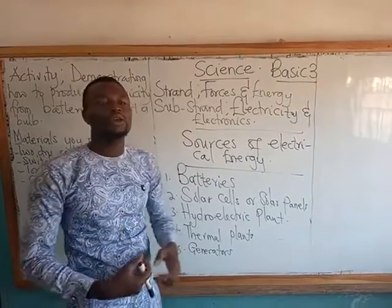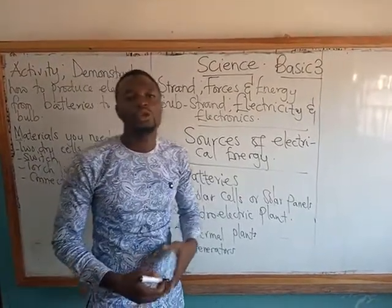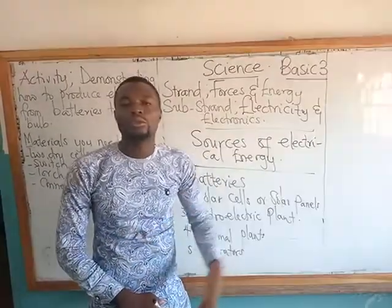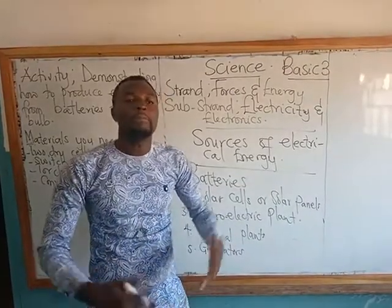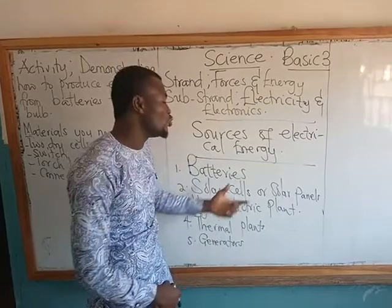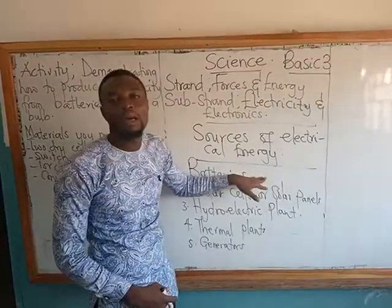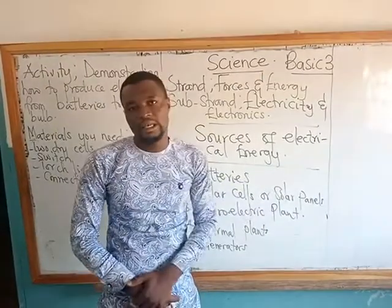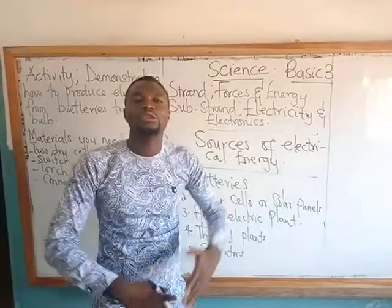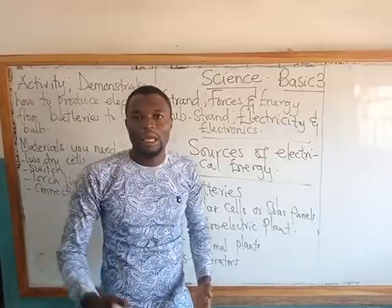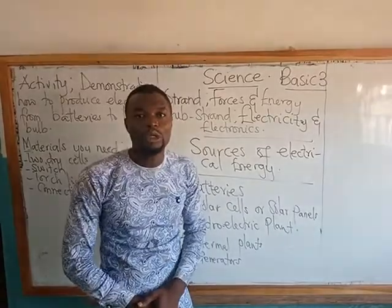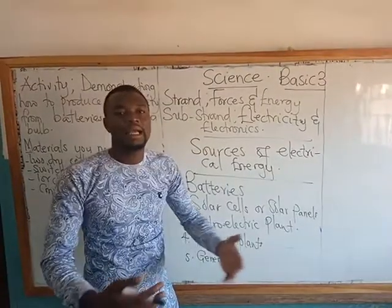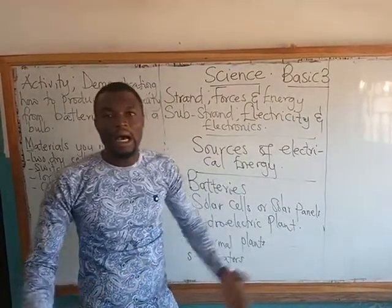We have another form of battery which we call wet cells. Those wet cells are usually used to power machines such as cars, motorbikes, and bigger machines. So when it comes to types of batteries, we have the dry cell and we have the wet cell. The dry cell is mostly what we use at home, and the wet cells, as I said, are used in bigger machines.